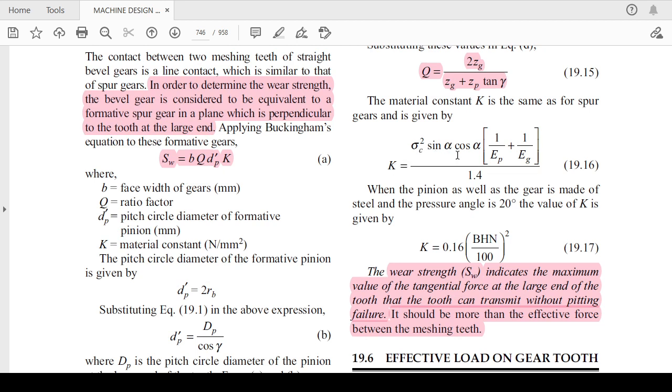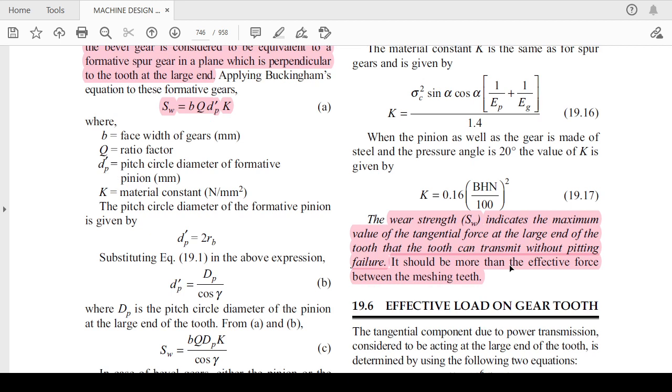K equals sigma_c square sin alpha cos alpha, 1 by E_p plus 1 by E_g, where E is your Young's modulus for the pinion and gears, divided by 1.4. Similarly, it can also be rewritten for 20 degree pressure angle as 0.16 BHN by 100 whole square.